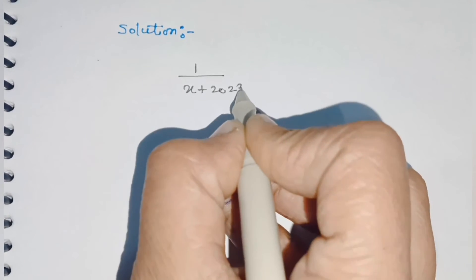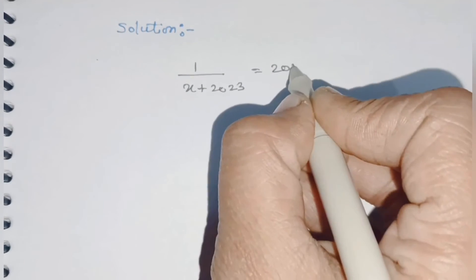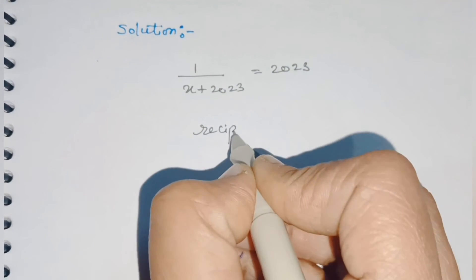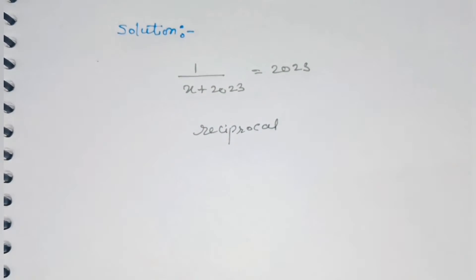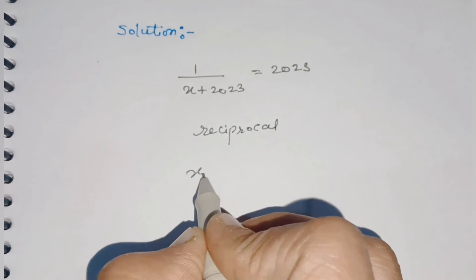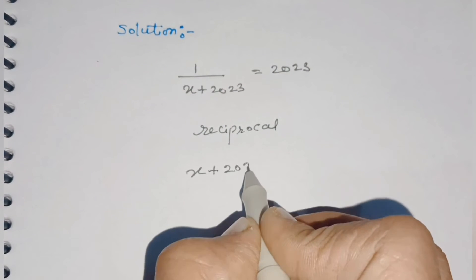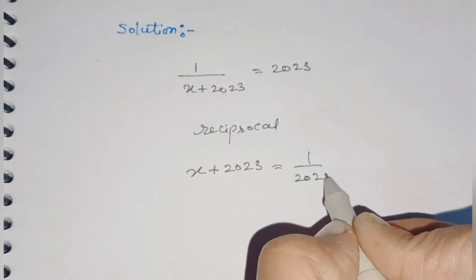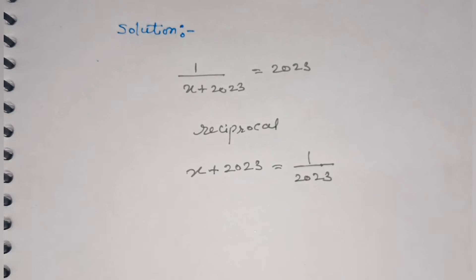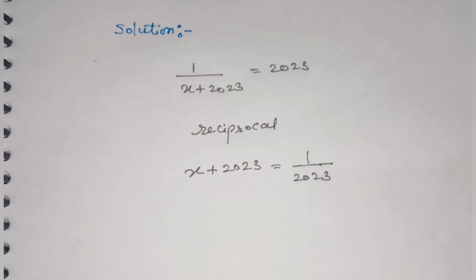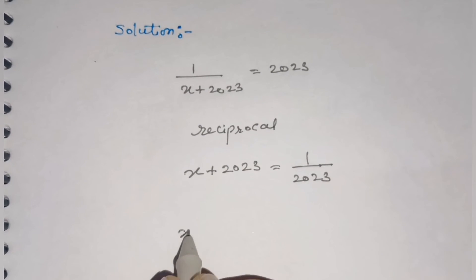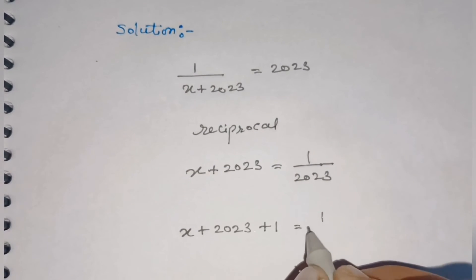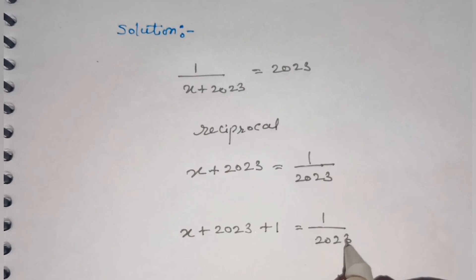For simplification of the calculation, let's take the reciprocal on both sides, so we get x + 2023 is equal to 1 over 2023. In the next step, we can add 1 on both sides, so we get x + 2023 + 1 is equal to 1 over 2023 plus 1.